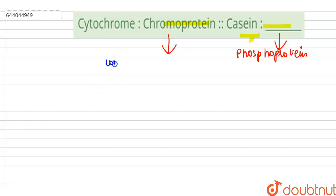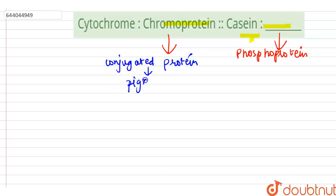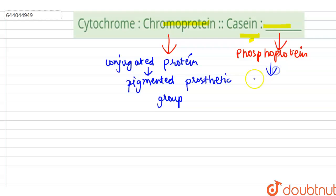Chromoprotein is a conjugated protein that contains a pigmented prosthetic group. Phosphoprotein, on the other hand, is a protein that is post-translationally modified.